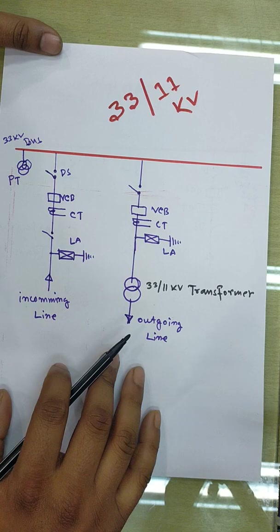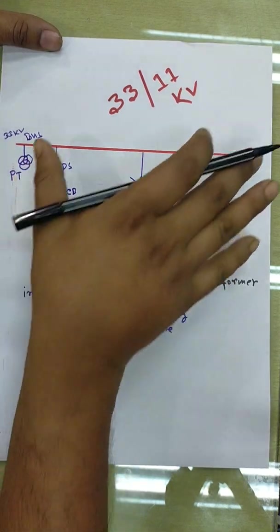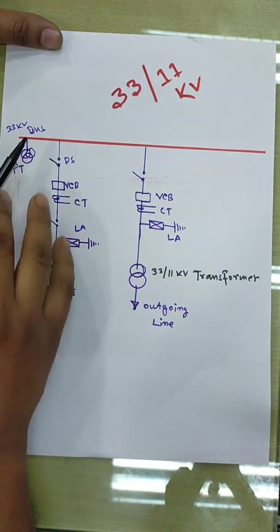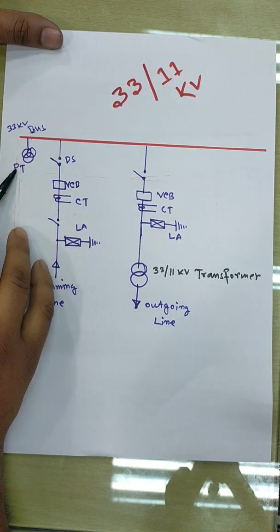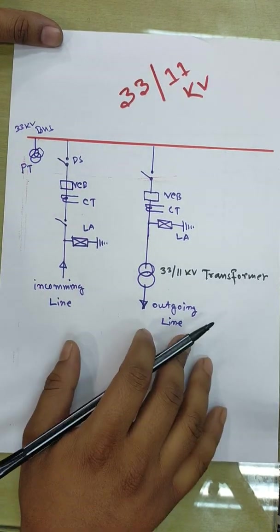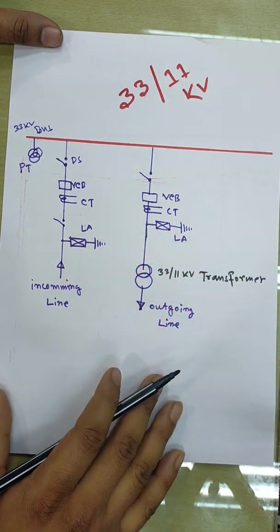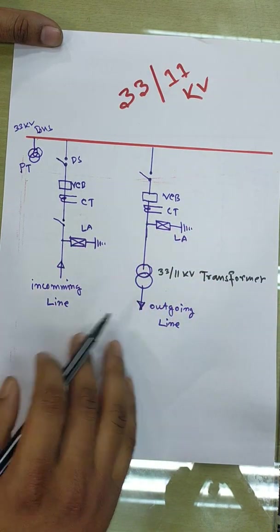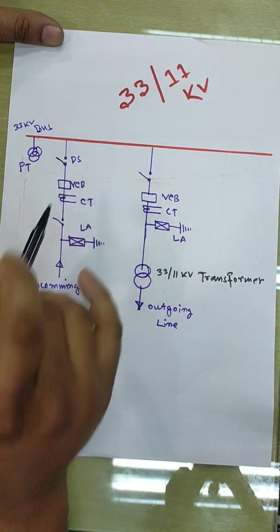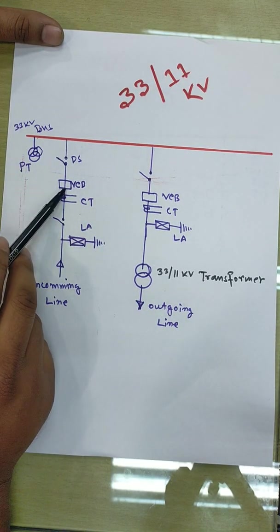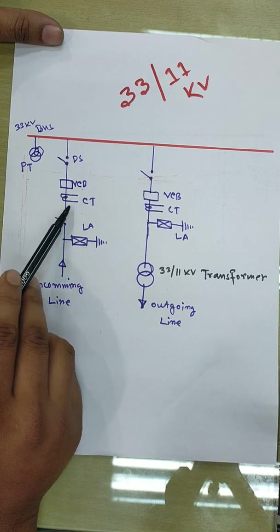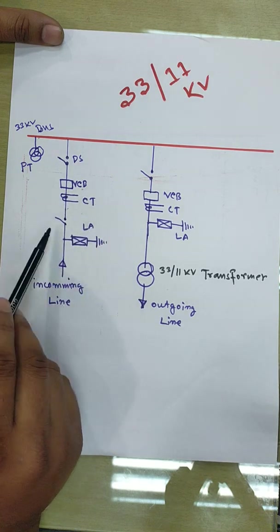Here we have CT, PT. We have the incoming line and the outgoing line. We have got the first isolator circuit breaker. This is the second circuit breaker. We have the relay with CT.